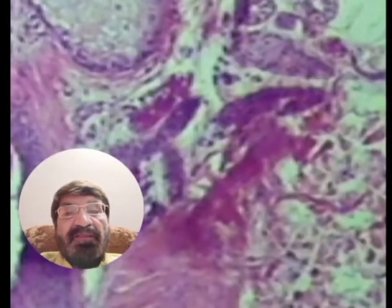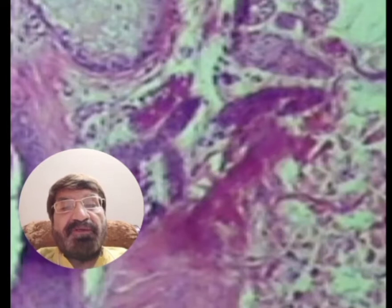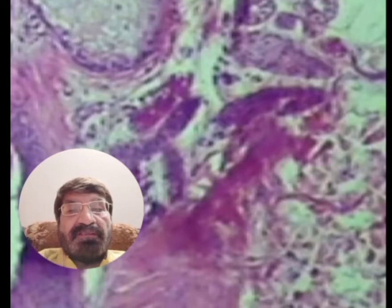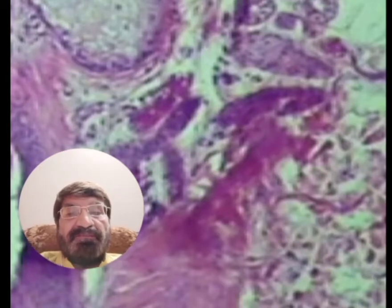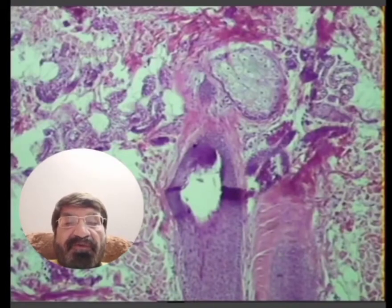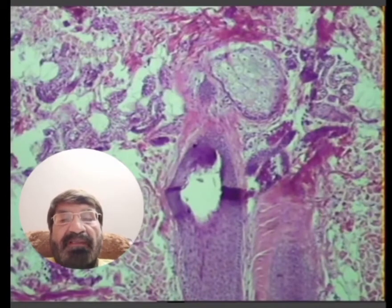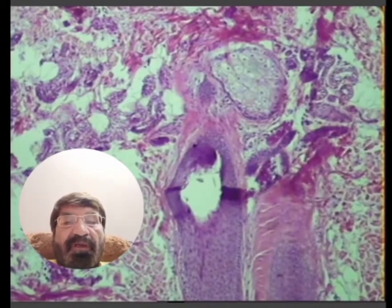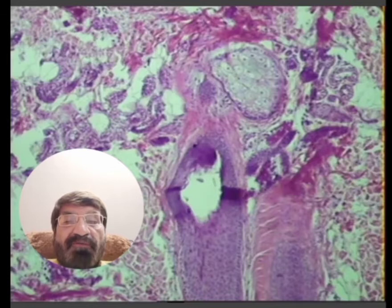These are the sweat glands — simple tubular coiled glands. Again, this is the hair follicle present in the reticular layer of the dermis. So this is the slide of the skin.